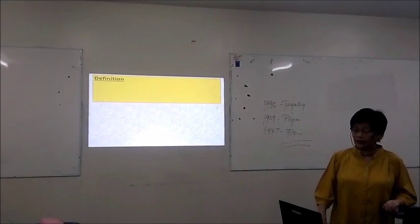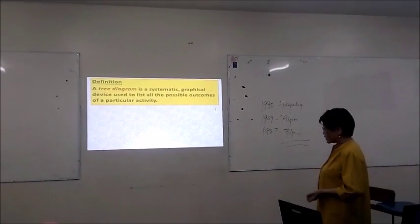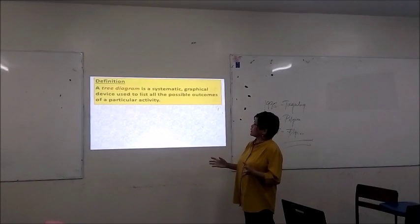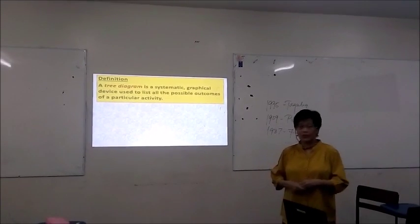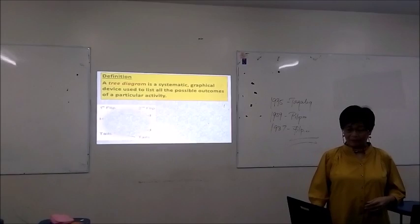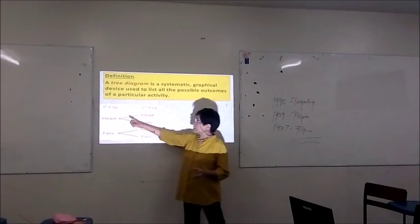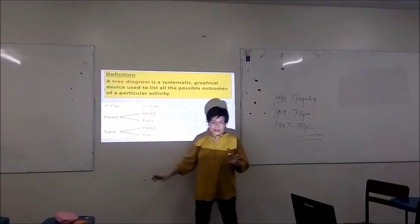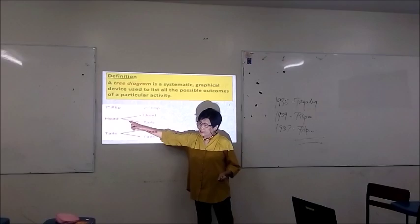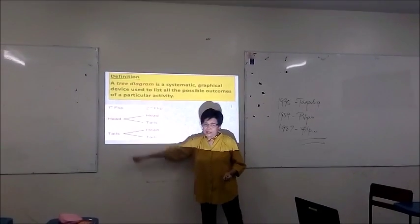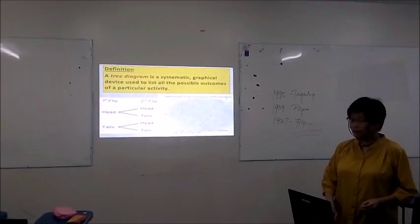So we now discuss the different ways of determining those possible outcomes. We have here a tree diagram. A tree diagram is a systematic graphical device used to list all the possible outcomes of a particular activity. For example, when you toss a coin twice, these are the possible outcomes. In the first flip, you could have either a head or a tail, and in the second flip, you can again have either a head or a tail. We can then count how many outcomes there are in that activity.